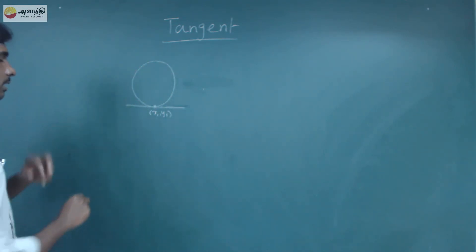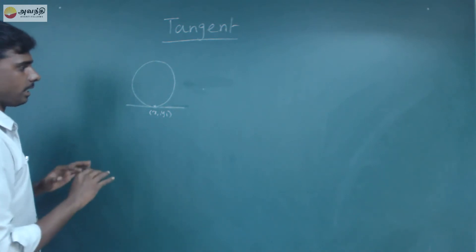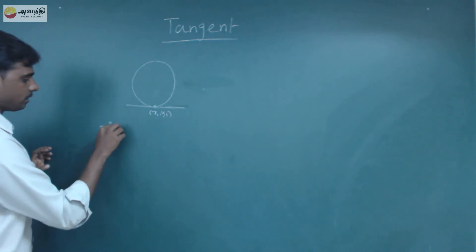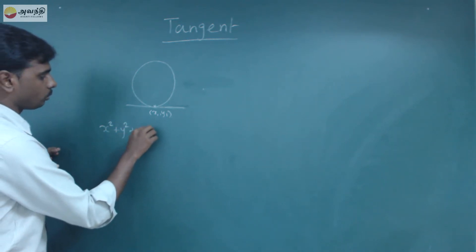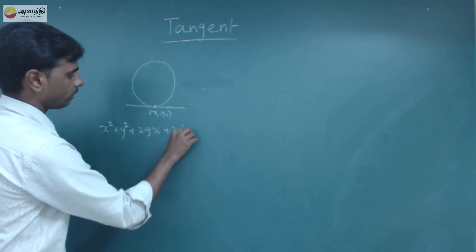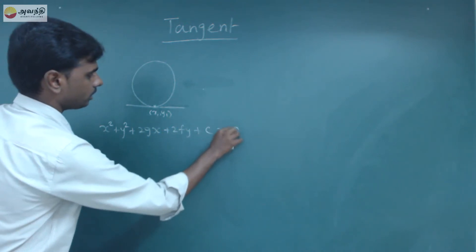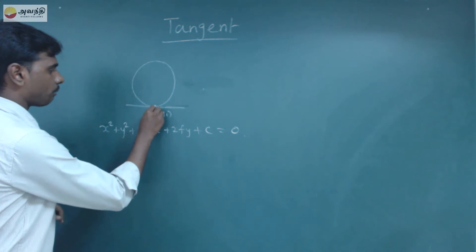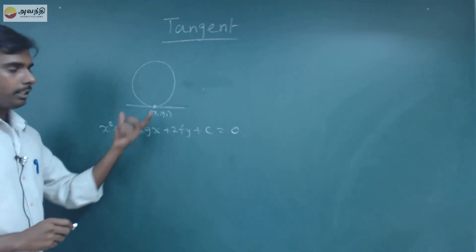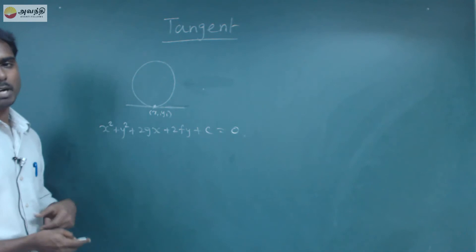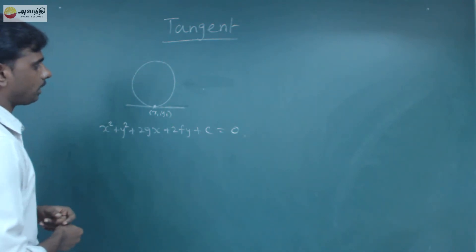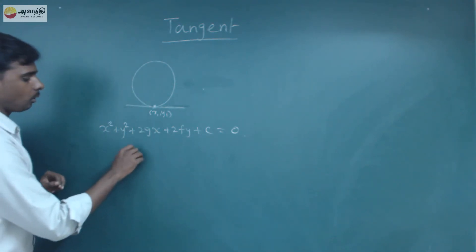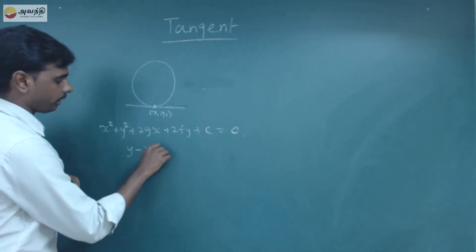This is the circle equation in general form. We know the radius and the center. The general circle equation is x² + y² + 2gx + 2fy + c = 0. We are going to talk about the point (x1, y1) in this tangent equation.